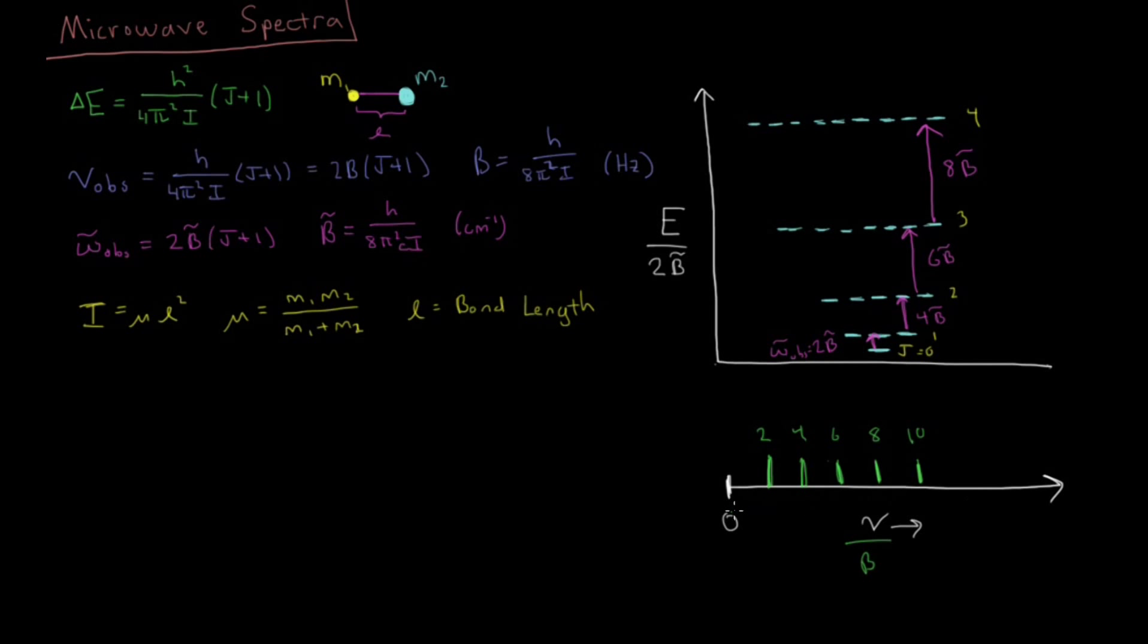We're going to go on from here to discuss what happens when we have vibrational transitions, which couple to this as well. So we're going to look at situations where not only does the rotational energy level change, but the vibrational level changes at the same time. And what kind of spectra do you get in that case?